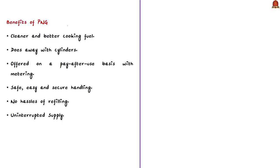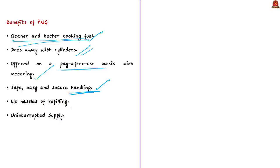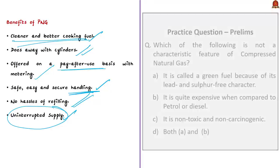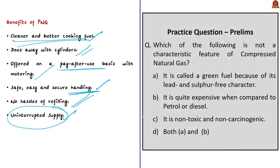PNG is also considered a cleaner and better cooking fuel. An additional advantage of PNG is that it doesn't need cylinders to store fuel, saving a lot of space. PNG is offered on a pay-after-use basis with metering — you pay only after using the fuel, not beforehand. It also ensures safe, easy, and secure handling because PNG is transported through pipelines, continuously fed into the system — no hassles of handling, refilling, or changing cylinders, providing uninterrupted supply to consumers.